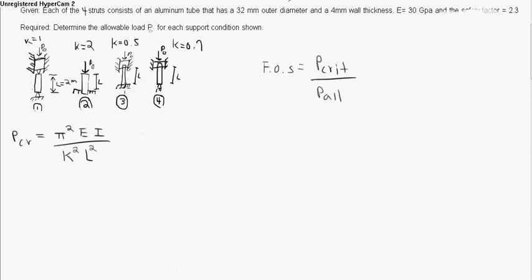If you have both ends are fixed, the fixity condition for that scenario is 0.5. If you have one end fixed and one end pinned, the fixity condition is 0.7.